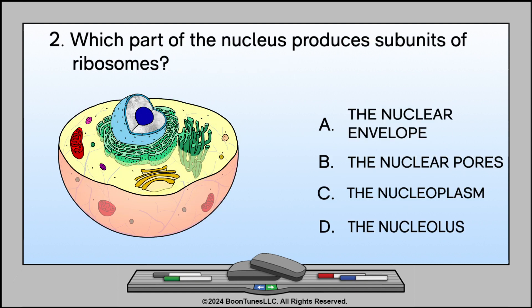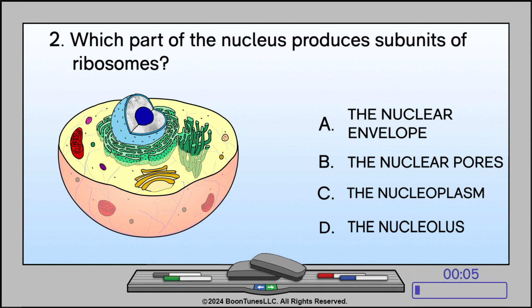Which part of the nucleus produces subunits of ribosomes? A. The nuclear envelope, B. The nuclear pores, C. The nucleoplasm, or D. The nucleolus? The answer is D. The nucleolus.